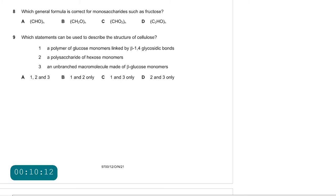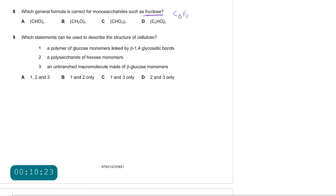Question 8: which general formula is correct for monosaccharides such as fructose? Glucose is C₆H₁₂O₆, and the empirical formula is CH₂O. The correct answer is B.